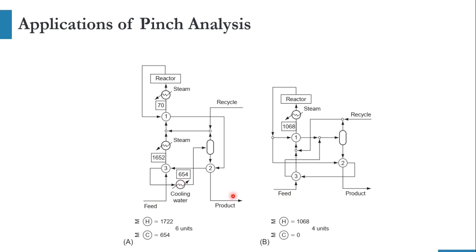Looking at a first system: feed goes to a heat exchanger requiring steam as utility, then to a reactor, then back through heat exchange with a cooling water requirement. The total heating requirement is 1722 kW, cooling requirement is 654 kW, and six units are required. In the improved system, the heating utility requirement has decreased to 1068 kW from 1722 kW, cooling water requirement is completely zero, and instead of two heat exchangers for steam there is only one. The system now uses only four units — saving two units and completely eliminating the cooling utility.